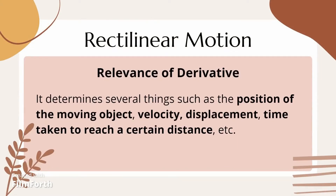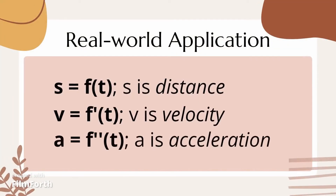In rectilinear motion, the relevance of derivatives is that it determines several things such as the position of the moving object, velocity, displacement, time taken to reach a certain distance, and more. Assuming that the distance has a function with respect to time denoted as s equals f, its derivative can be considered as its instantaneous velocity or simply velocity, denoted as v equals the first derivative of f. Moreover, the derivative of the velocity function with respect to time is called instantaneous acceleration or simply acceleration, denoted as a equals the second derivative of f. Note that when velocity is zero, it might mean that the object has stopped or changed its direction.